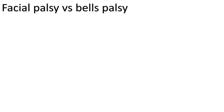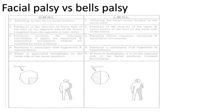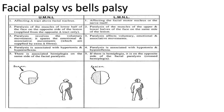This table will help you understand the difference between facial palsy and Bell's palsy presentation, and you can diagnose patients based on it. Keep in mind that facial palsy is upper motor neuron palsy, i.e. central nerve palsy, whereas Bell's palsy is lower motor neuron, i.e. peripheral nerve palsy.